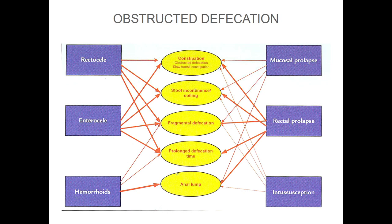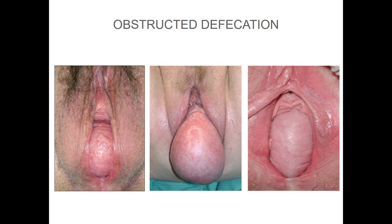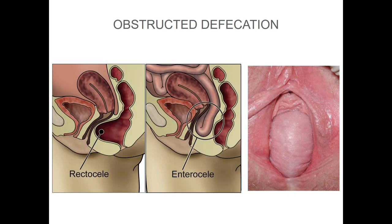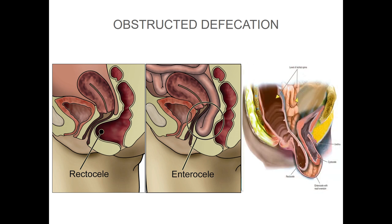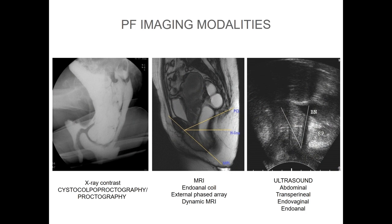Outlet obstruction is a symptom. You don't know what the pathophysiological mechanism is behind it. In the same female with the same symptom, you can have multiple reasons. They can have hemorrhoids, prolapse, or different kinds of prolapse coexisting. If you see a vaginal wall prolapse in your office, prolapse is like a hernia — but you don't know what is inside the hernia sac. The patient may have a rectocele, an enterocele, or a combined prolapse. Clinically, if you only see the vaginal wall prolapse, you cannot define what is inside.